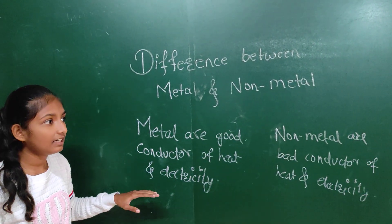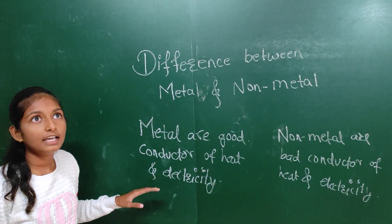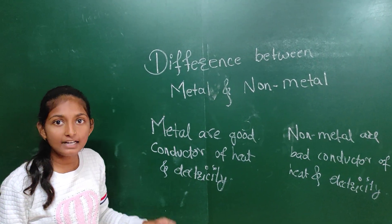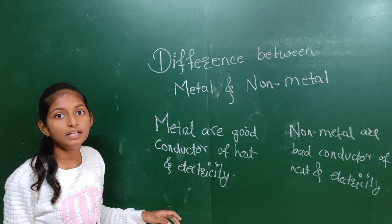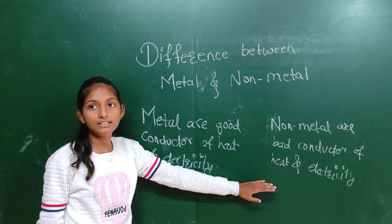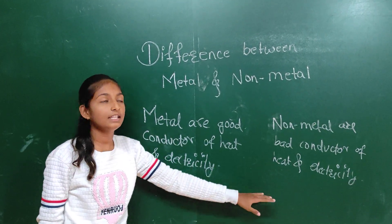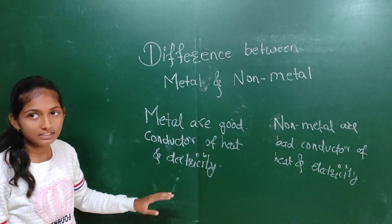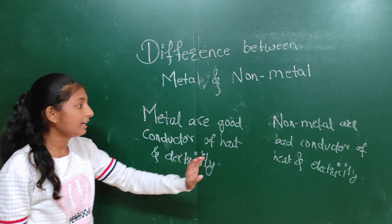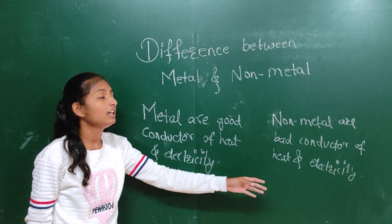Then metals are sonorous, meaning when we hit a hard substance of metal, they make a sound. In non-metals, they are non-sonorous. Then metals are lustrous because they shine, and non-metals are non-lustrous.